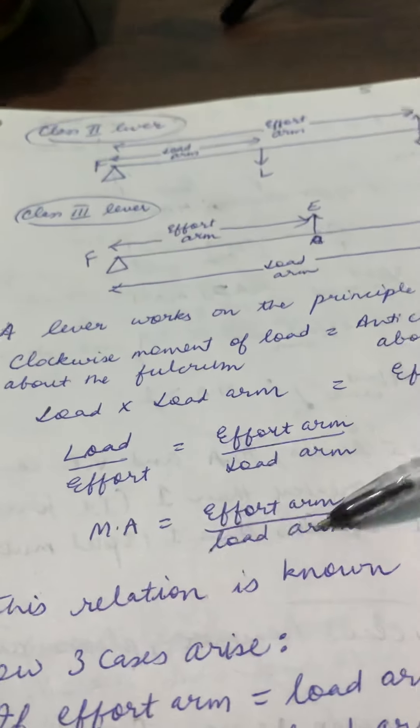In the third case, if the effort arm is less than the load arm, the answer will be less than 1. In class two levers, the effort arm is always greater than the load arm, so mechanical advantage is always greater than 1, meaning it is always a force multiplier. And class three levers always have mechanical advantage less than 1, meaning they are always speed multipliers.